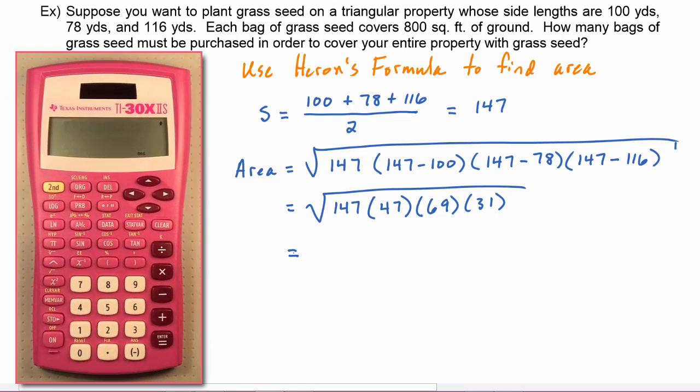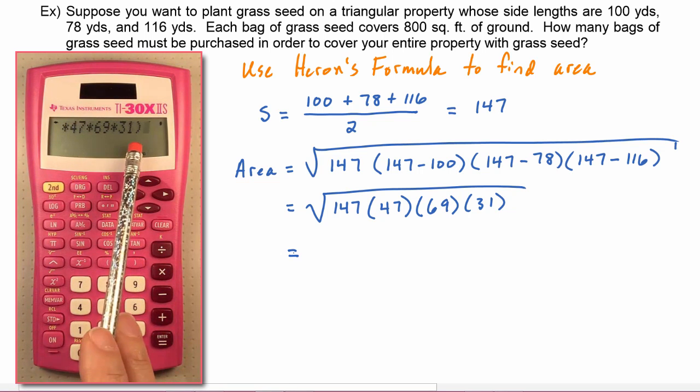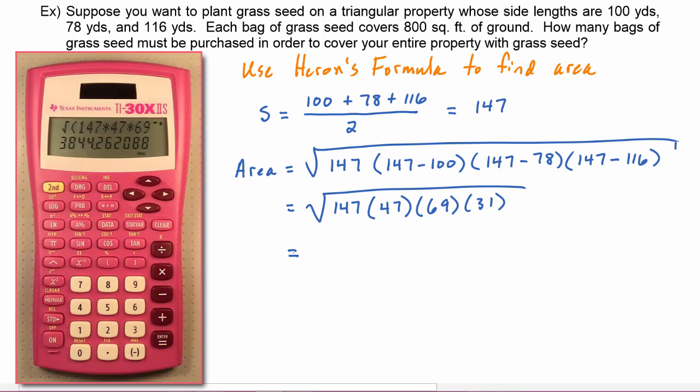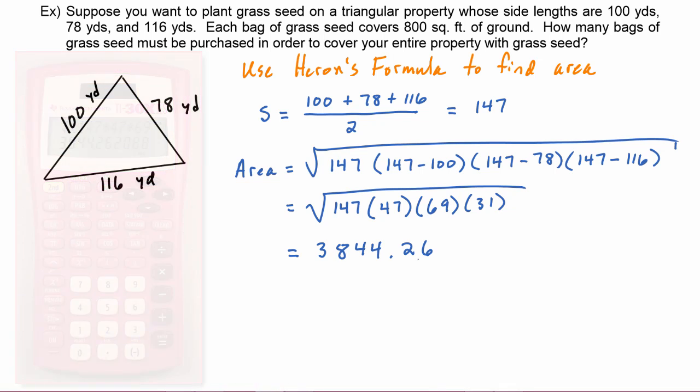So now we can take the square root of all of that. We can do square root of 147 times 47 times 69 times 31. And we get 3844.26. Now let's think about our units here. The lengths of the sides were in yards, so that means the area of our property is in square yards.